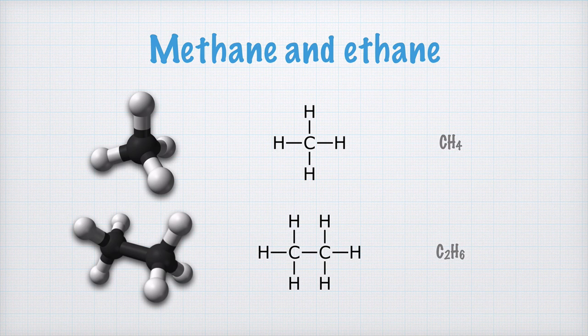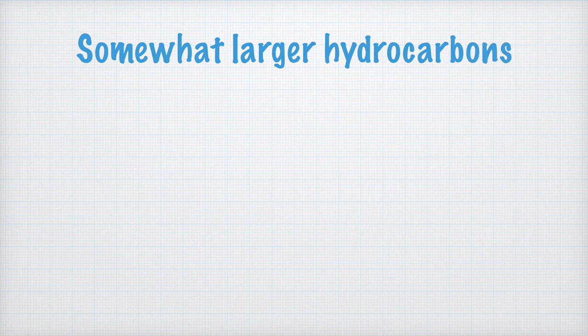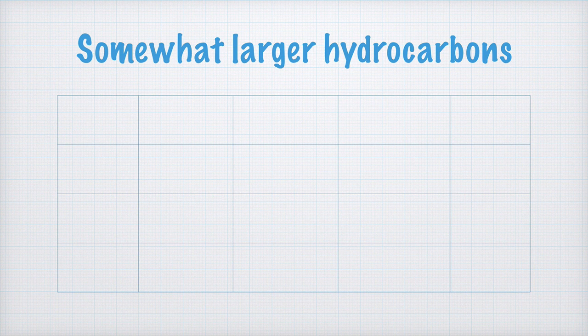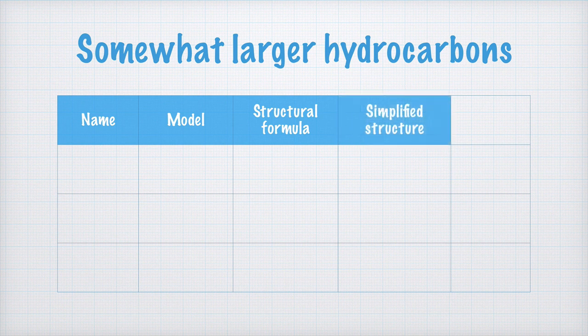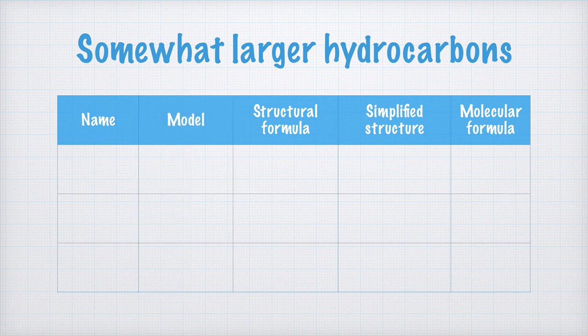I want you to learn that methane and ethane are the two simplest hydrocarbons, with one and two carbon atoms respectively. To study the somewhat larger hydrocarbons, I think it would be appropriate to organize them in a table. In this table, I put name, model, structural formula, simplified structure, and molecular formula in the table head. You copy this table too, but you can skip model, because there I will show models which you don't have to draw. Methane and ethane, as I said, contain one and two carbon atoms respectively.